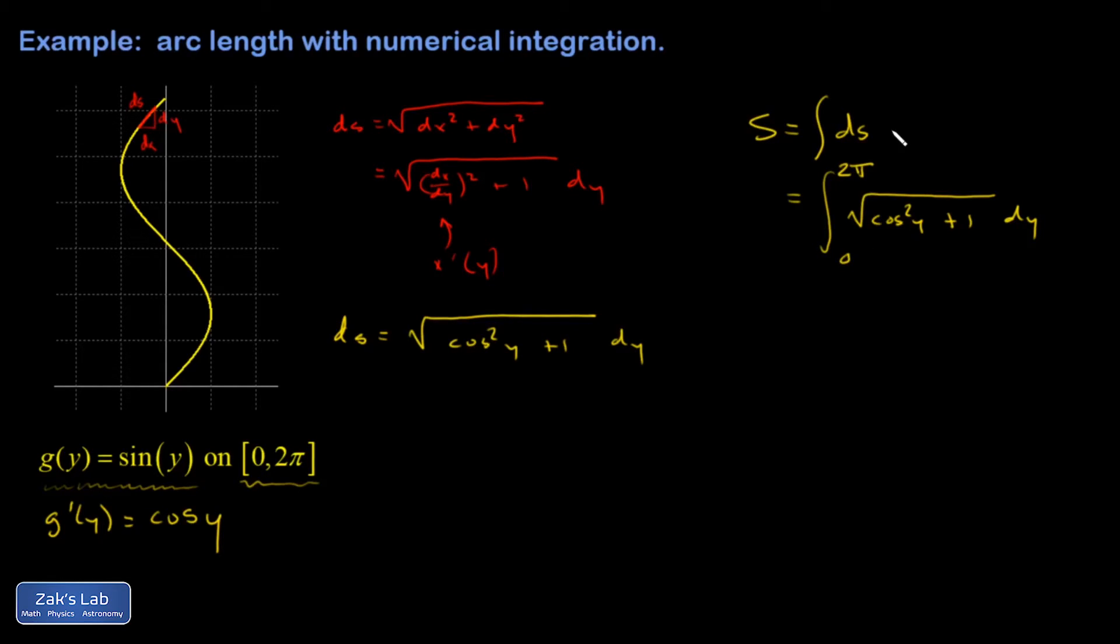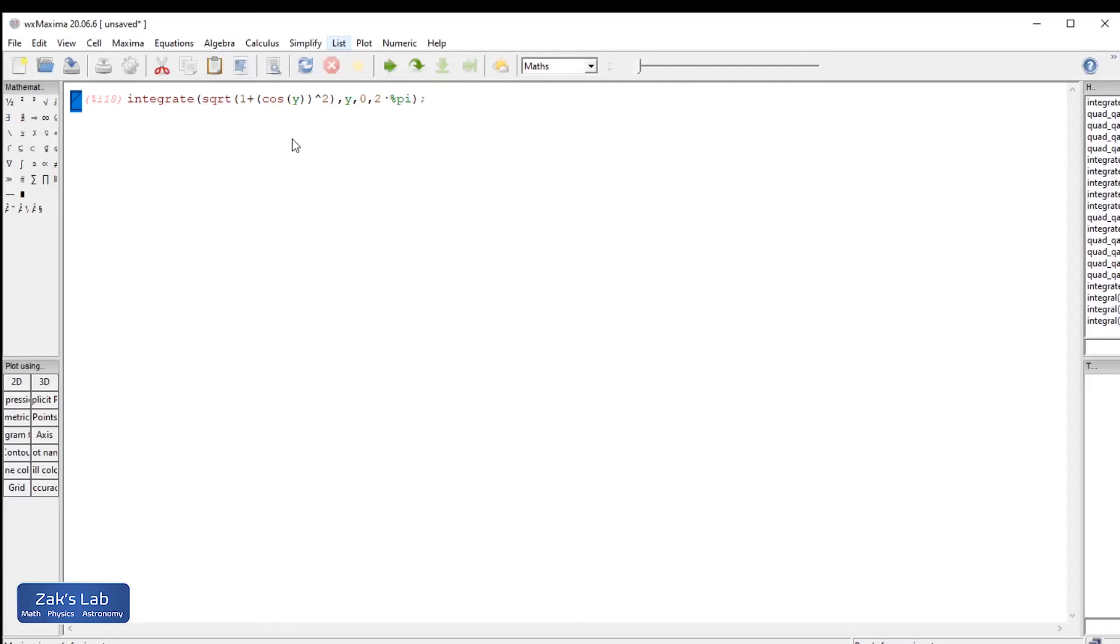Now this is an integral that looks tempting, like we might be able to do it symbolically. All right, so here I've typed in the function into Maxima. Square root 1 plus cosine squared y, as y goes from 0 to 2 pi. So pi comes with a percent out in front in Maxima. And I'm attempting to do this definite integral. And Maxima just repeats the same integral back to me, which means this integral can't be done symbolically.